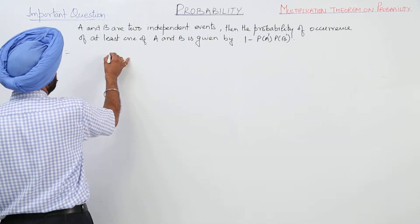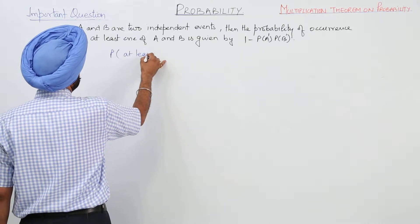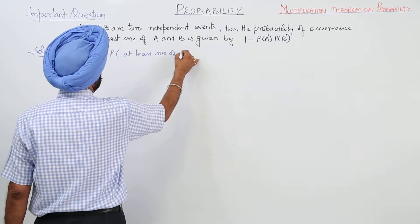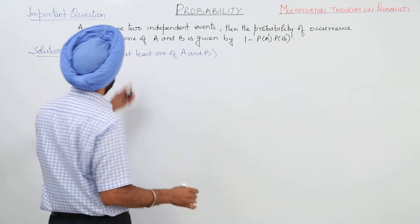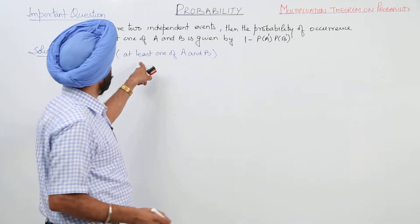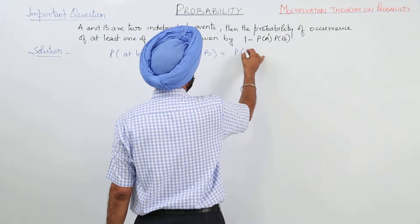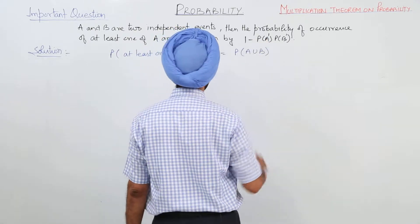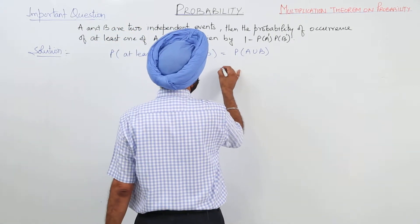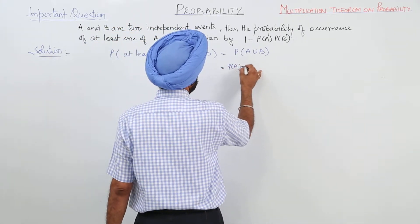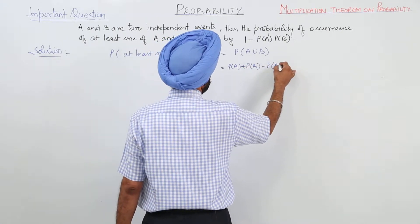The probability of at least 1 of A and B is given by probability of A or B, that is P(A∪B). Now, P(A∪B) can be written as probability of A plus probability of B minus probability of A and B.